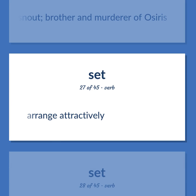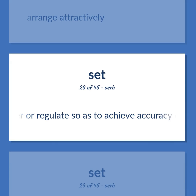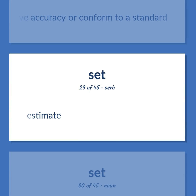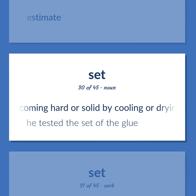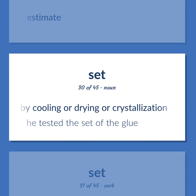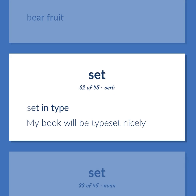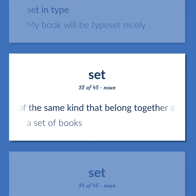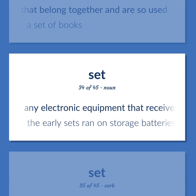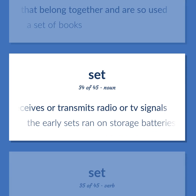SET: Arrange attractively. Alter or regulate so as to achieve accuracy or conform to a standard. Estimate. The process of becoming hard or solid by cooling, drying, or crystallization — he tested the set of the glue. Bear fruit. Set in type — my book will be typeset nicely. A group of things of the same kind that belong together — a set of books. Any electronic equipment that receives or transmits radio or TV signals — the early sets ran on storage batteries.